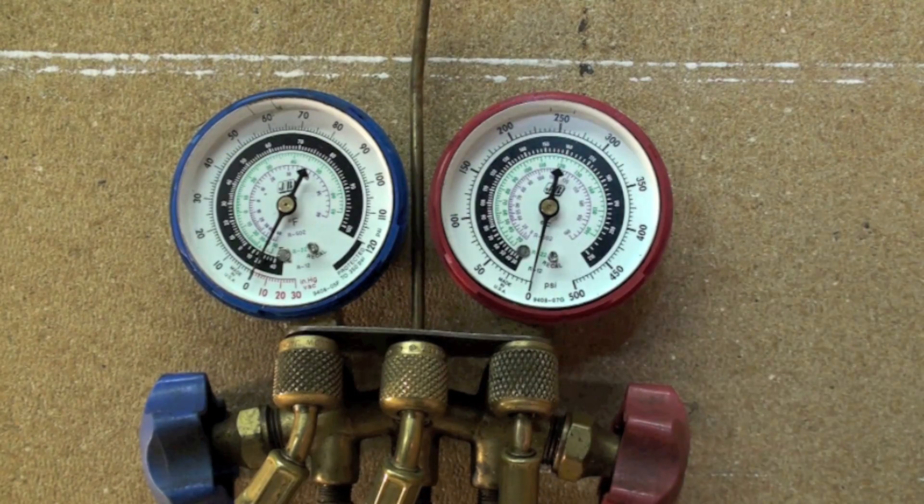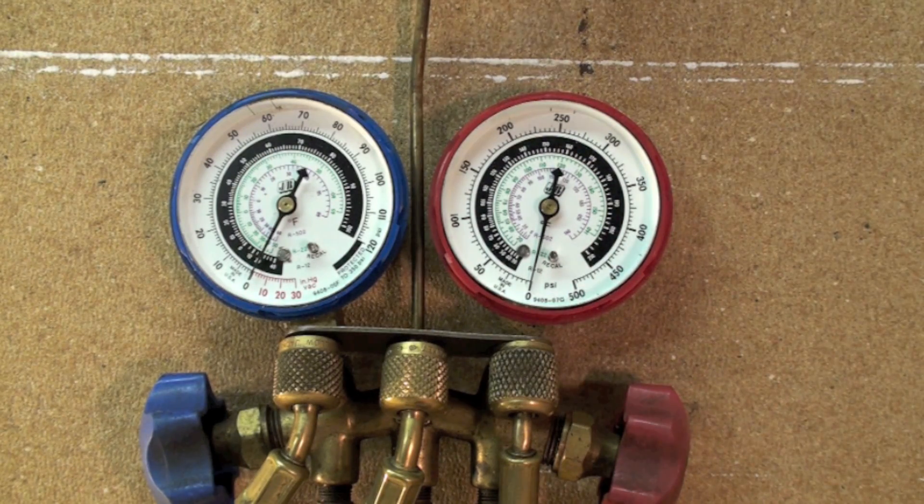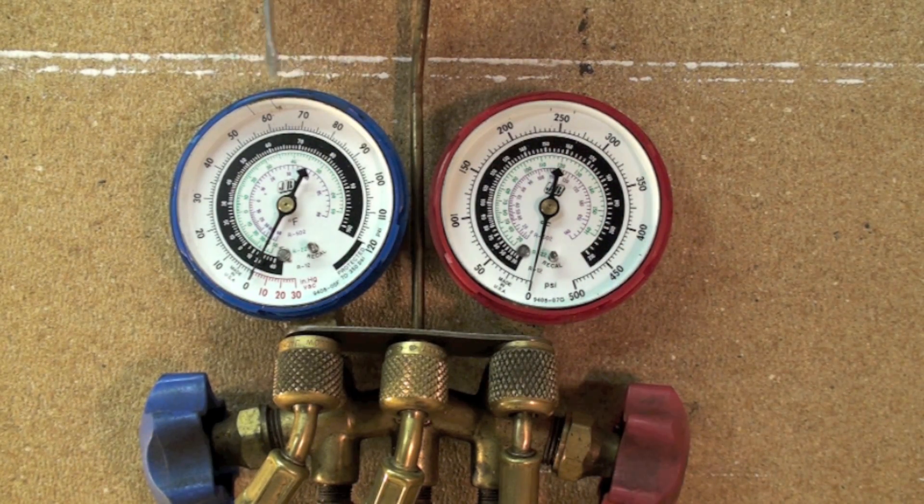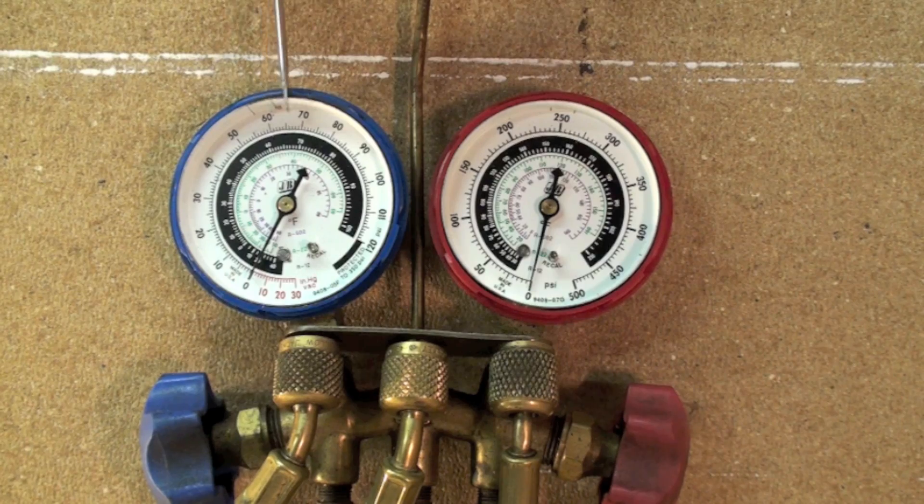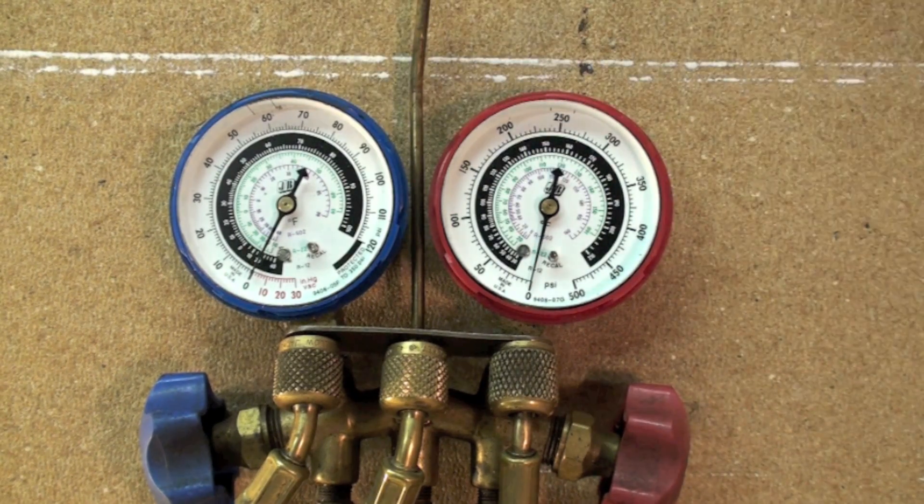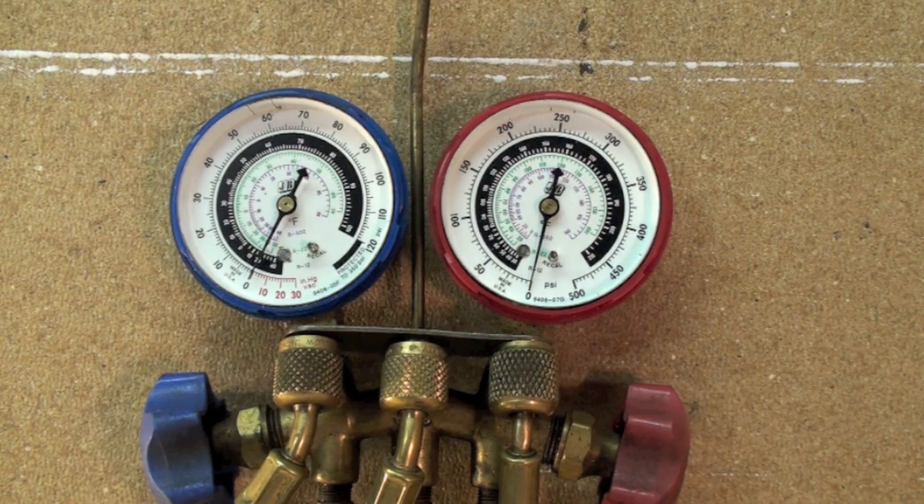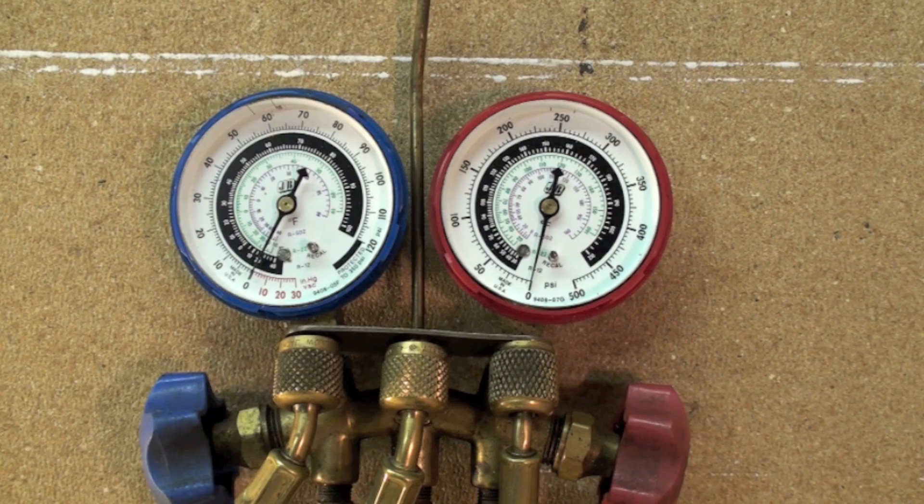But if you're over four or five pounds off on this thing, that can make quite a bit of difference in the evaporating temperature here and of course condensing temperature there. Not quite so picky on the condensing temperature because a gauge isn't going to show it that close anyway.